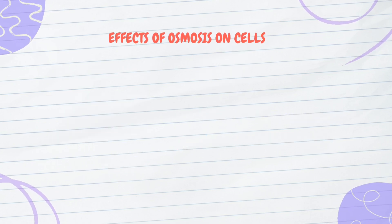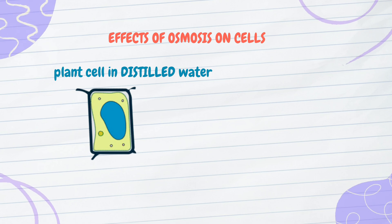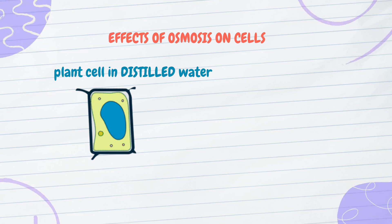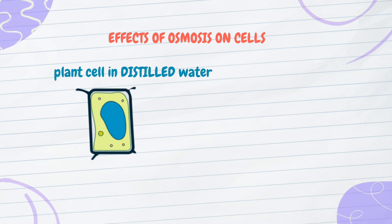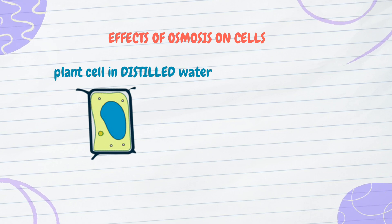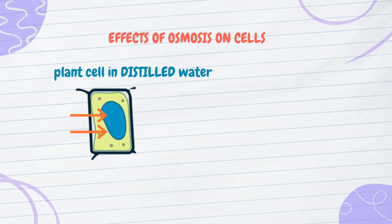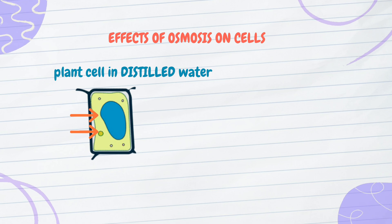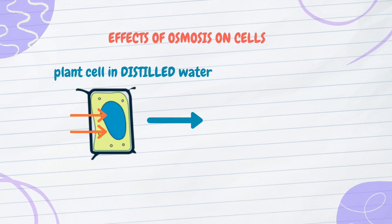So what are the effects of osmosis on cells? Let's start with a plant cell in distilled water. Distilled water is a hypotonic solution — it has a lower solute concentration than the cytoplasm. Therefore, when a plant cell is placed in distilled water, water molecules move into the cell, and the cell membrane exerts pressure on the cell.